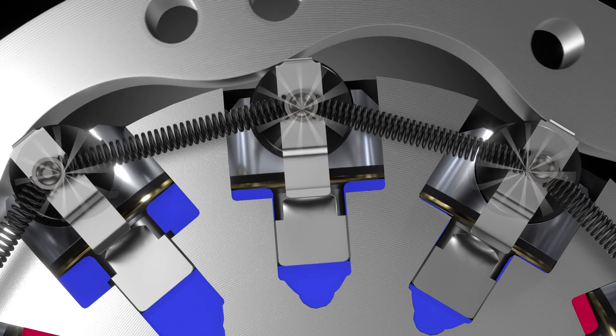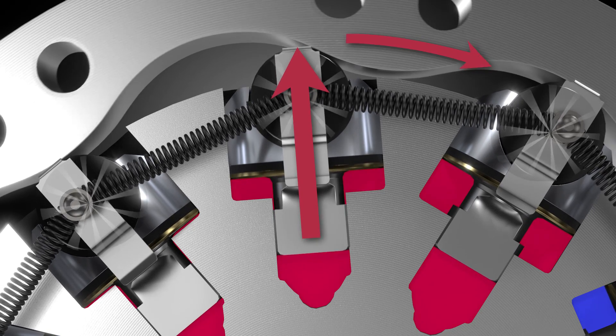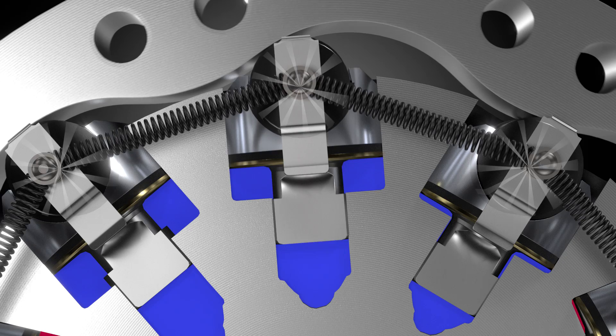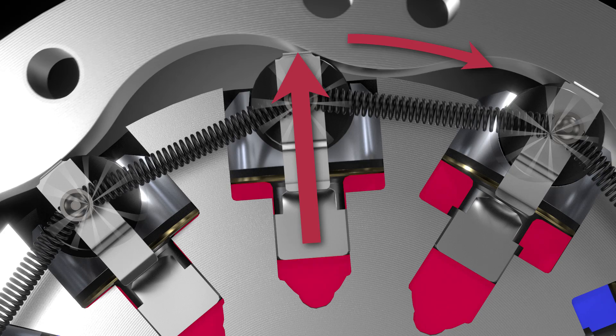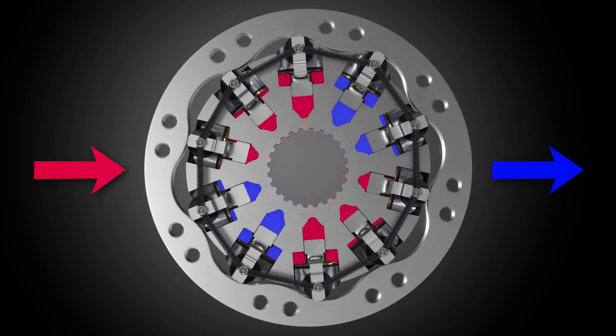The wheel is rotated by specific cylinders being alternately supplied with pressure, while at the same time oil is able to drain away from the other cylinders. In the cylinders that are under pressure, the piston is pushed outwards, the rollers rest against the cam ring, and torque is produced that drives the front wheels.